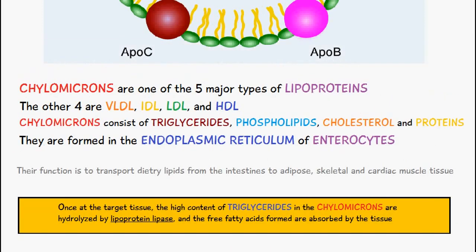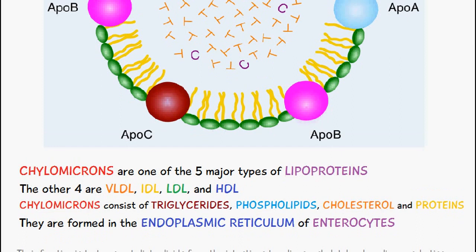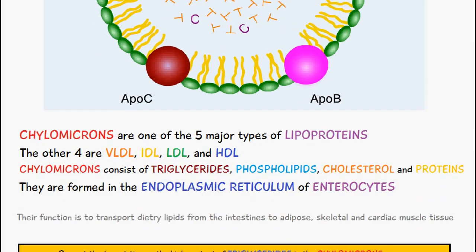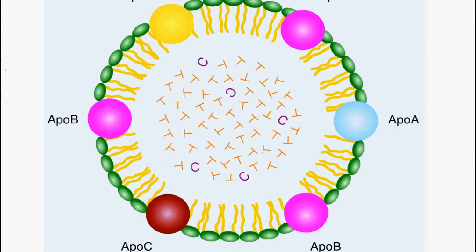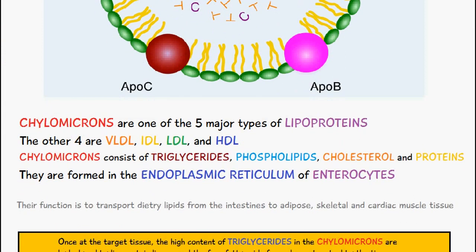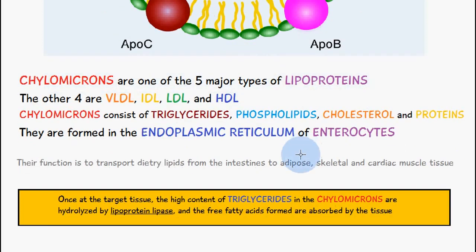Because lipids can't travel through the bloodstream — since blood is pretty much water-based — we have chylomicrons to help transport these lipids. Initially, chylomicrons are released into the lymphatic system via the central lacteals, then absorbed through the thoracic duct, and from there they enter the bloodstream where they can be transported to adipose tissue and skeletal and cardiac muscle tissue.